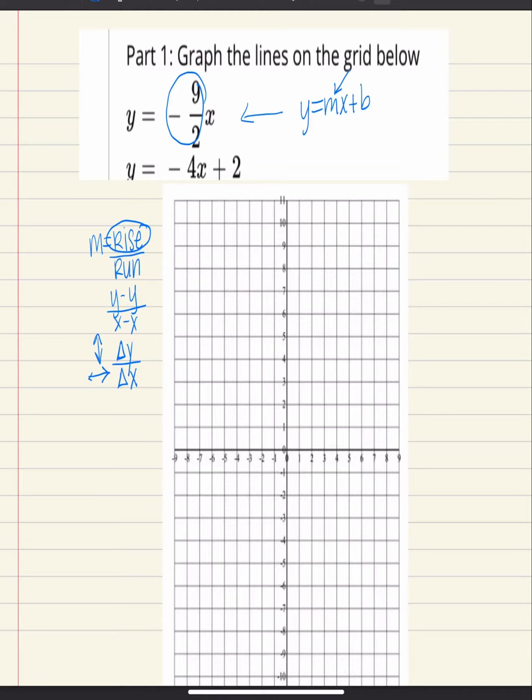So when our slope is negative 9 over 2, we always start with our b value, but because this doesn't have a b value, you're going to default to 0, 0. So from that b value, we're going to rise negative 9, which means we're going to go down 9.